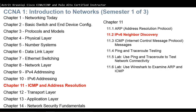Hello and thank you for watching the second lesson of chapter 11, which is 11.2 IPv6 Neighbor Discovery. In the previous lesson 11.1, Address Resolution Protocol, we found that in IPv4 we use ARP to resolve IPv4 addresses to MAC addresses, or layer 3 to layer 2. In this lesson we're going to learn how IPv6 does that process.